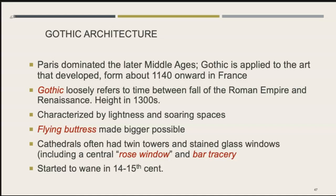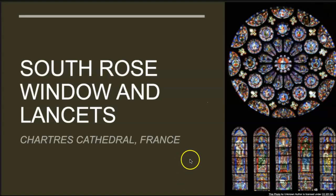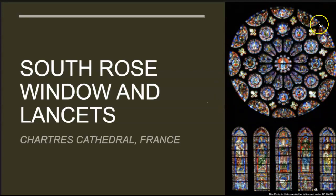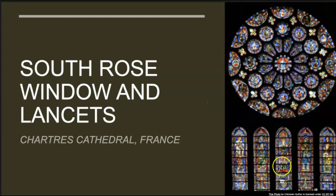The Gothic architecture movement started to wane in the 14th and 15th centuries. Here you see an example of a rose window and lancets at Chartres Cathedral in France. The rose window was a round window with little rosettes around it — beautiful detailing — and the stained glass pictures depicted important saints or figures from the Bible.